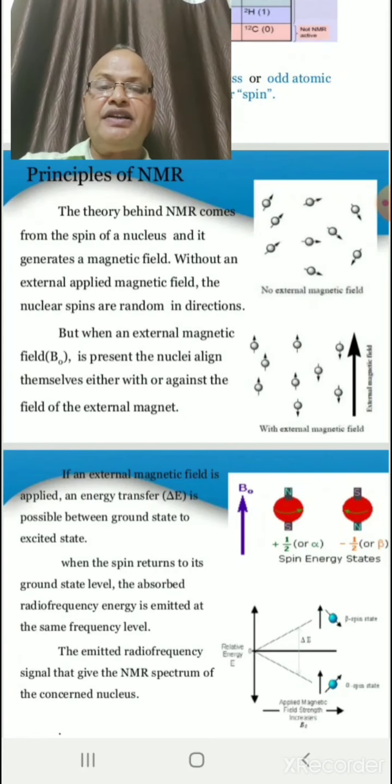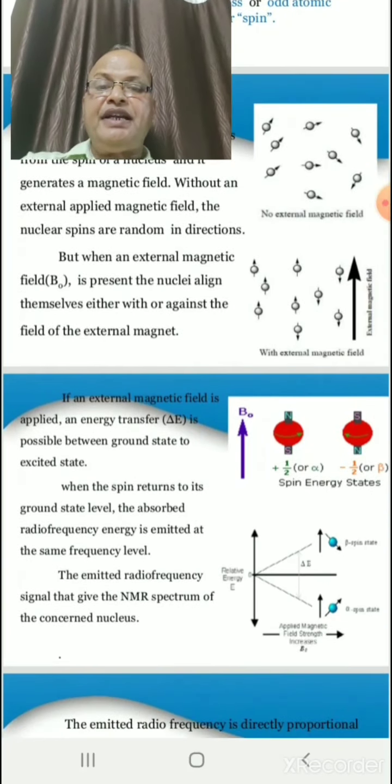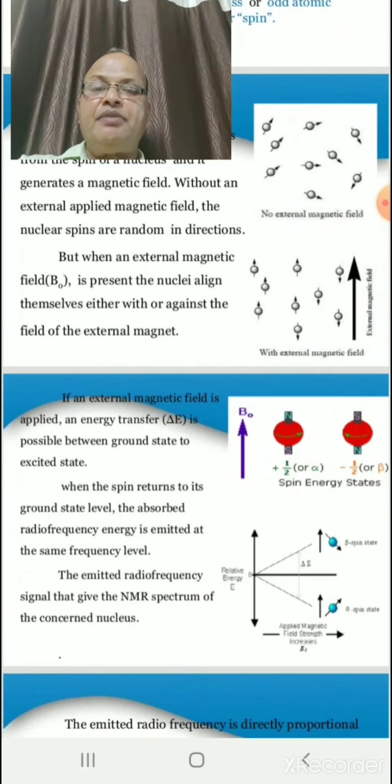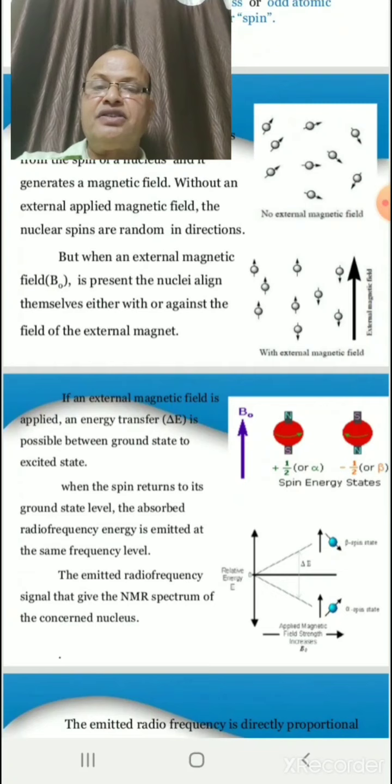When the spin returns to its ground state level, the absorbed radiofrequency energy is emitted at the same frequency level. The emitted radiofrequency signals give the NMR spectrum of the concerned nucleus.